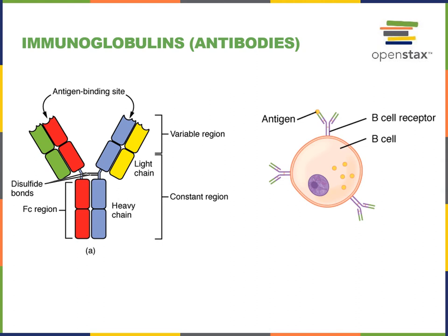However, during clonal selection, when a B lymphocyte is activated to divide and make more B lymphocytes, all of the B lymphocytes produced during clonal selection will make antibodies that have the same antigen binding site and can therefore defend against the same specific pathogen.